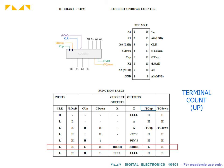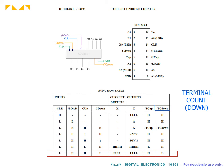This is called the up-terminal count or a carry-out. There is correspondingly an active low output to indicate that it has attained its lowest count of all 0s. This is called the down-terminal count or borrow-out.